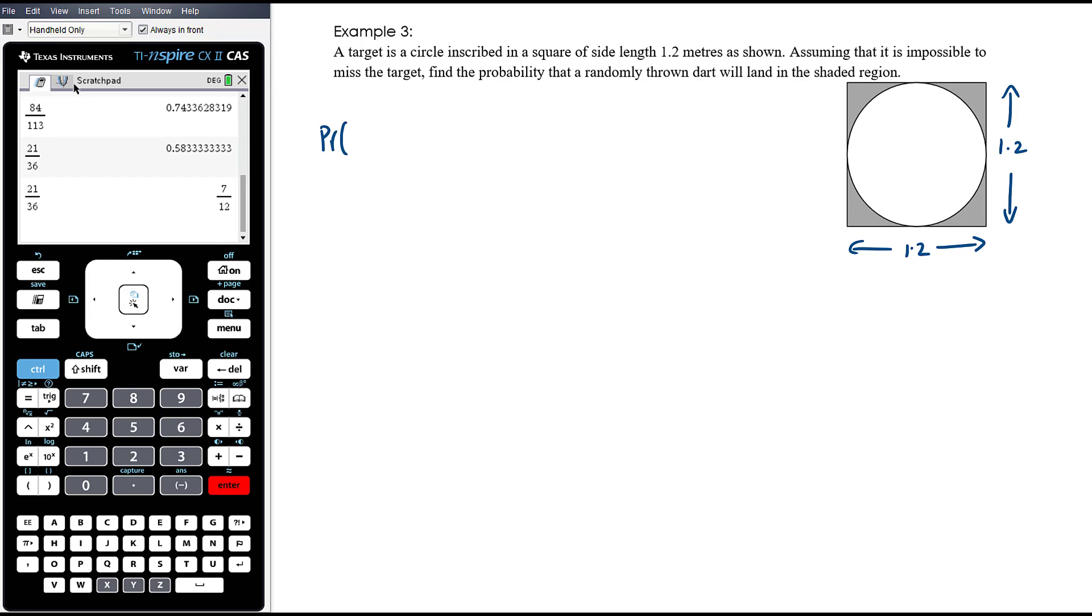The probability of hitting the shaded region is going to be the shaded area divided by the total area of the target. So the shaded area is going to be the area of the square, which is 1.2 squared, take away the area of the circle. Now the radius of that circle is 0.6, so that's going to be π times 0.6 squared, over the total area which is 1.2 squared.